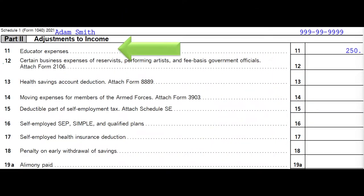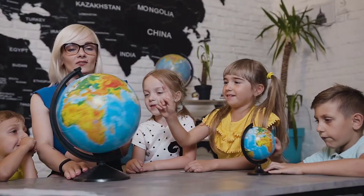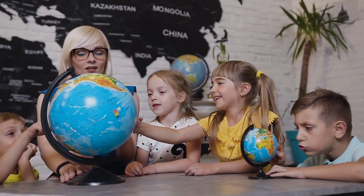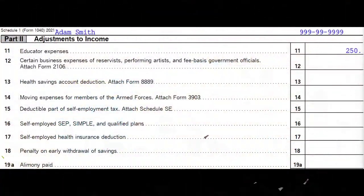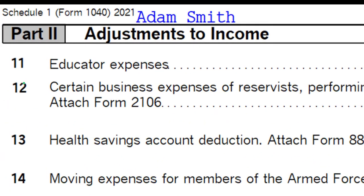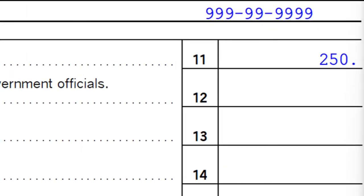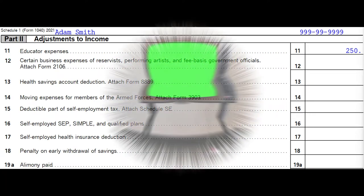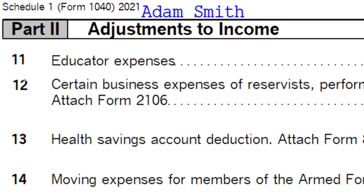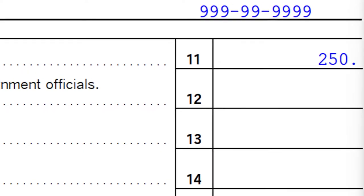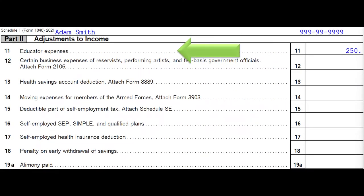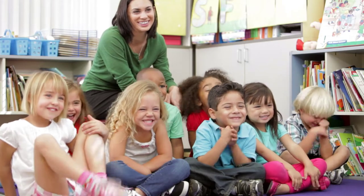The educator expenses deduction was carved out a long time ago for qualified educators. It's specific to a particular industry, which is unusual — it demonstrates the influence of teachers' unions at that time. However, the deduction amount hasn't really been adjusted upward with inflation, remaining fairly static. The general rule is: if you have a K-through-12 teacher, they probably qualify for this deduction.